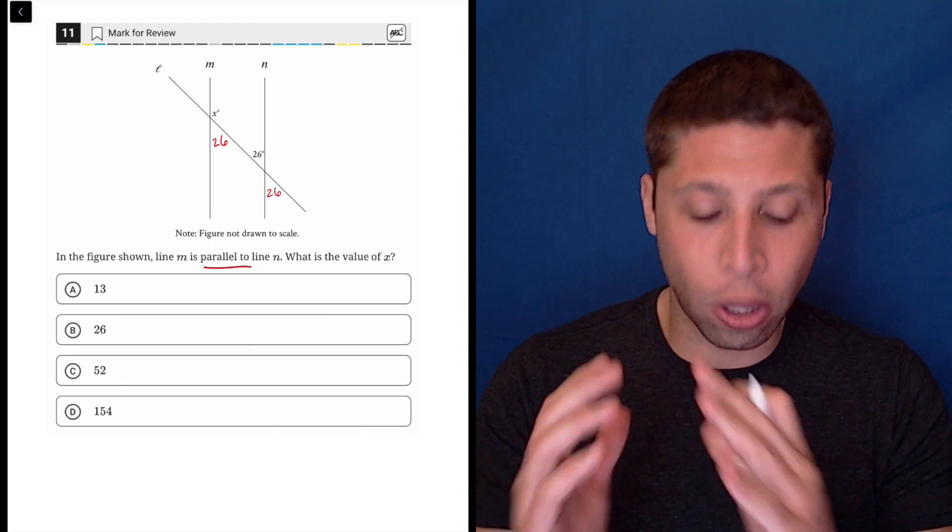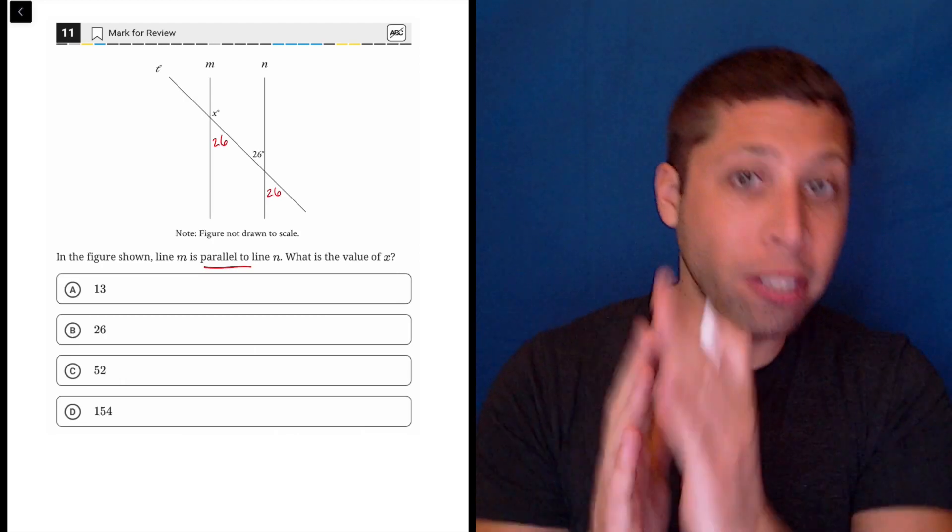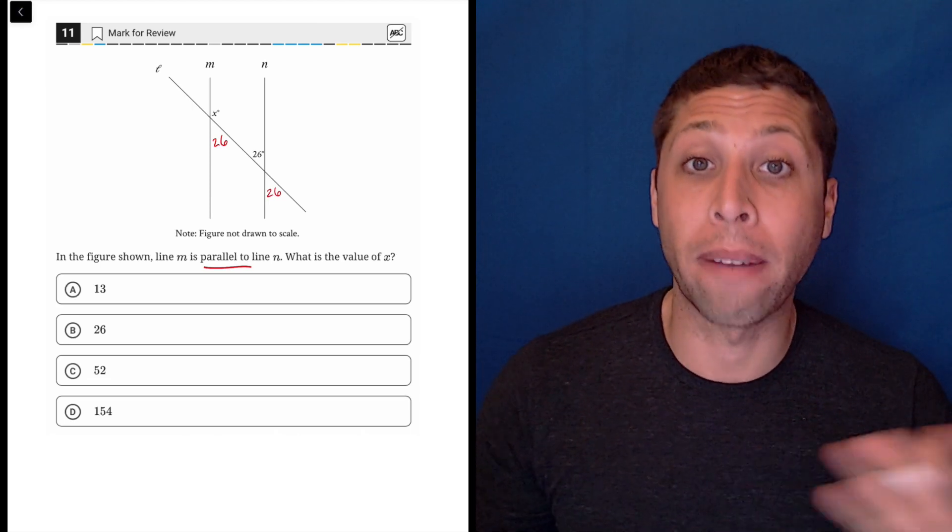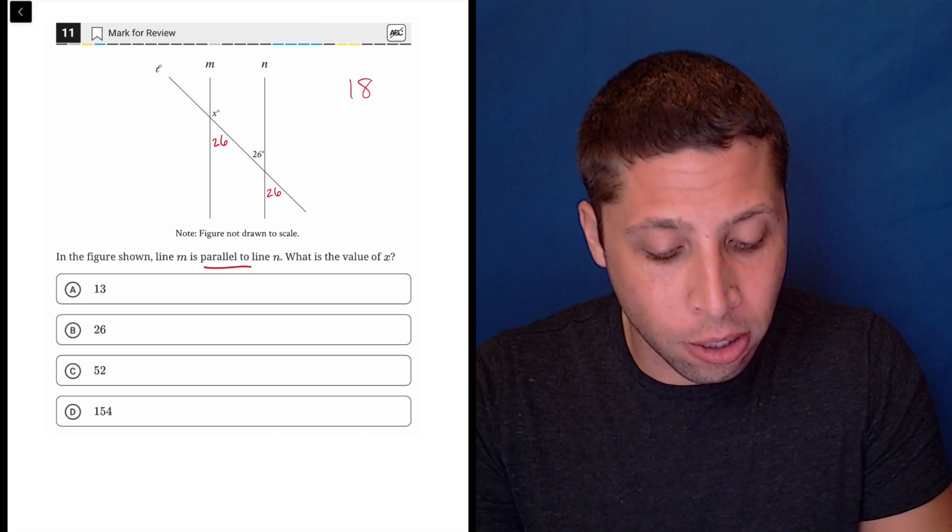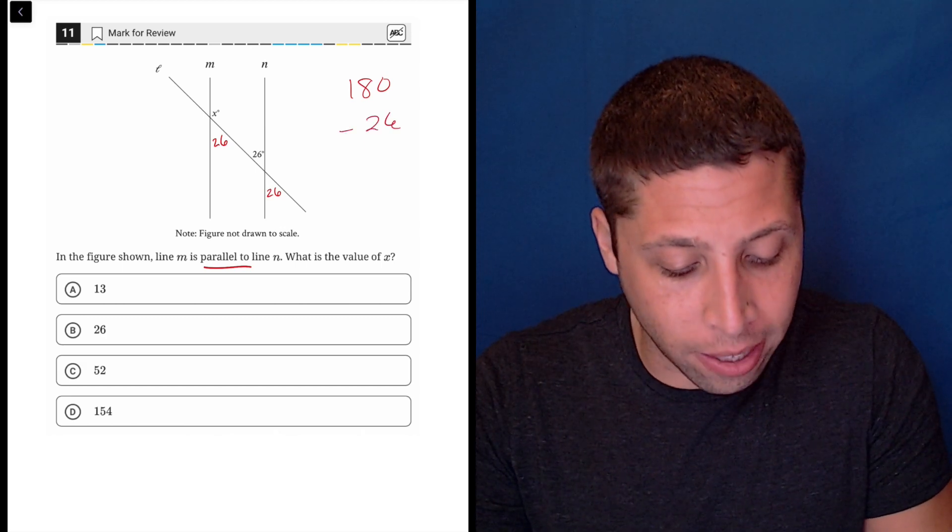Now notice that the 26 and the X are on the same straight line. So this is where we have supplementary angles that add up to 180. Let's take 180, subtract out the 26.